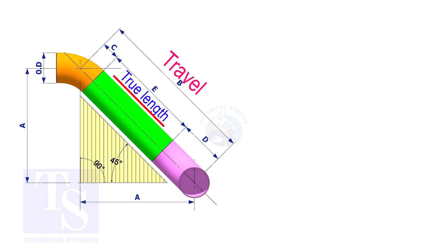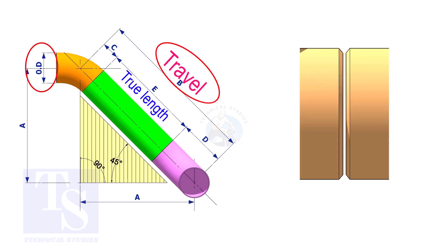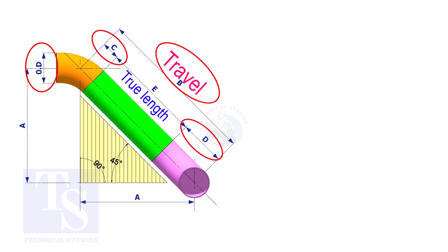To calculate the true length or the cut length, we need to know the travel length, the diameter of the pipe, the joint gap, and the elbow center. The elbow center is sometimes called takeoff length.